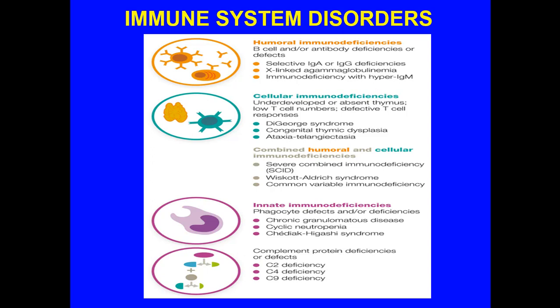You can also have a combined humoral and cellular deficiency — for example, severe combined immunodeficiencies, SCID, with Wiskott-Aldrich syndrome. The innate system can be affected also, and this may be a completely separate situation. You could have phagocyte defects or deficiencies, and you can have deficiencies in making the complement proteins C2, C4, and C9.